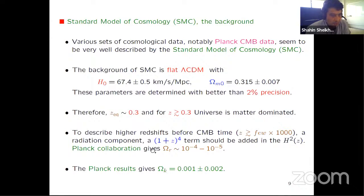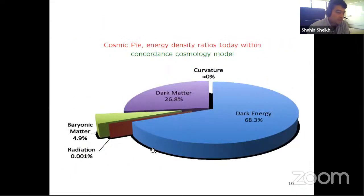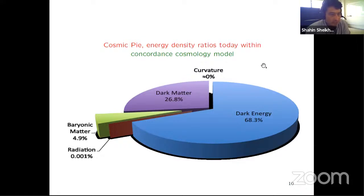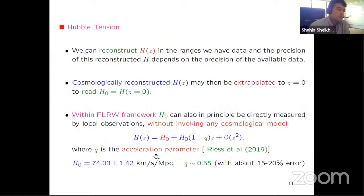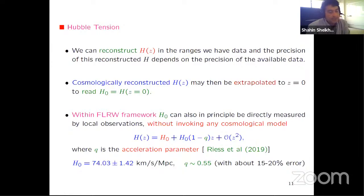The standard model of cosmology includes dark matter, dark energy, radiation, and matter. Now, what is the Hubble tension? We can reconstruct H(Z) from cosmological data within a given cosmological model, and then extrapolate to Z equals zero to read H_0. Within FRW cosmology, we can also directly measure H_0 by doing a Taylor expansion around Z equals zero. According to the SHOES collaboration, H_0 is around 74 and the deceleration parameter Q is about 0.55 with about 10-15% precision.